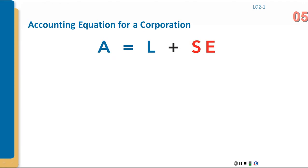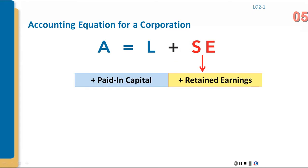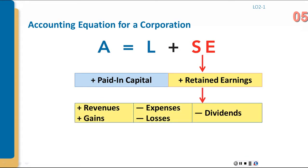For the corporation, we change 'owner's equity' to 'shareholder' or 'stockholder equity.' It is made up of paid-in capital — monies or assets provided to the corporation in exchange for ownership — and retained earnings, which consists of profits (revenues minus expenses). Gains and losses, such as from selling equipment, also appear in retained earnings, as do dividends paid out, which are a subtraction. So the two components are paid-in capital and retained earnings.